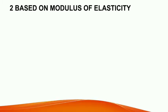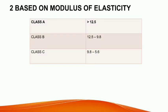Next is classification based on the modulus of elasticity. Timber can be classified as Class A, Class B, and Class C. Class A timber means the modulus of elasticity is greater than 12.5. Class B means the E value will be between 12.5 to 9.8. Class C means the E value is 9.8 to 5.6.